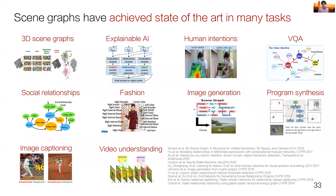Today, the task of scene graph generation has inspired models that utilize scene graphs to improve a variety of core computer vision tasks, including 3D understanding, explainable AI, understanding intentions, social relationships, and even generating images, programs, and answering questions.